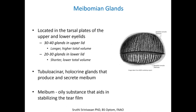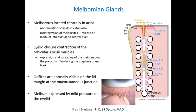These glands are tubuloalveolar holocrine glands that produce and secrete meibum. Meibum is an oily substance that aids in the stabilization of the tear film. The picture to the right shows a cross-section of a meibomian gland, composed of a central duct and small acini that look like grapes, connecting to the central duct via duct tubes. Meibocytes located in the acini disintegrate and release meibum into the central duct via the duct tubes, and then the meibum is released out of the orifice.